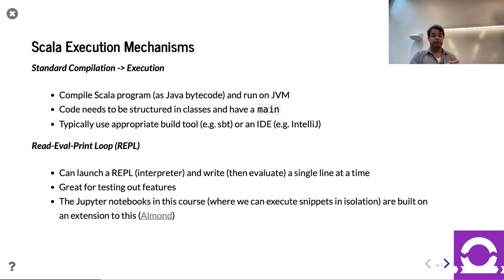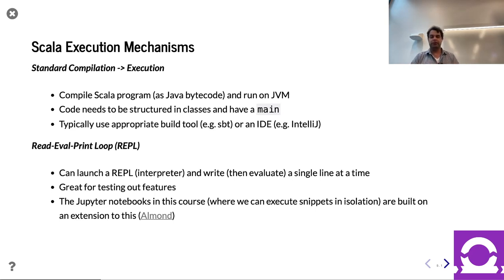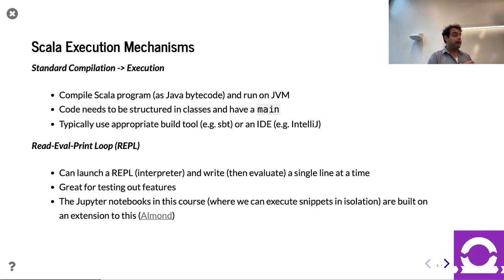When you're running Scala, you have a few choices. You can do a regular compilation execution flow: you compile a Scala program and run it on the JVM. These programs need a proper structure — a main, a class, etc. Usually you don't compile one file at a time; you use a build tool like SBT or Mill. I also recommend heavily using an IDE — I use IntelliJ. So when you're running a full-fledged Scala program, there's a build step, a compile step, then it runs. It's a heavyweight process.